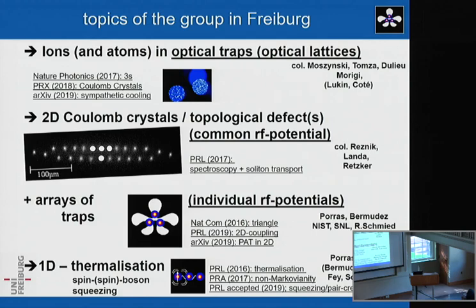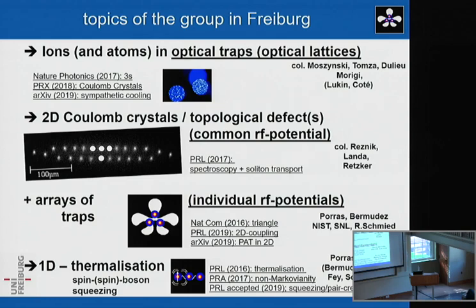I should mention our collaborators. For the optical trapping it's Robert Moczynski, Tomsa, Oliver Dillieu, and Giovanna Morici. For the two-dimensional crystals it's Benny Retznik, Hagey Landa, and Alex Retzker. For the triangular traps I mentioned NIST and Sandia. Diego Pauls and Alejandro Bermudes are also close collaborators — you might remember that name from the 2004 paper with Zorek starting the business of quantum simulations in quantum spin Hamiltonians. For the squeezing we draw an analogy to cosmology — creating pairs of phonons in a non-adiabatic expansion — done with cosmologists Wolf Schützhold and his PhD student Christian Feig.